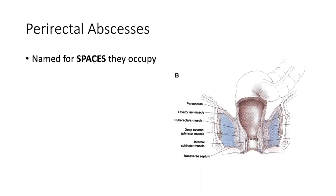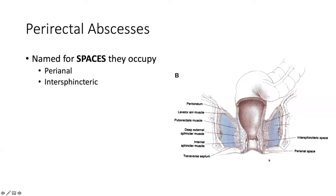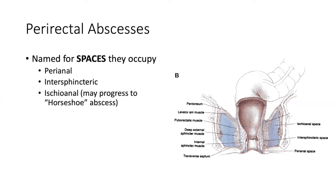I just have two last brief slides about abscesses and fistula-in-ano. Abscesses are named for the spaces that they occupy. Starting at the bottom, the superficial-most space — the perianal space. Then the intersphincteric space. Then the ischiorectal fossa — and the deep post-anal space communicates with that. And then the supralevator space.